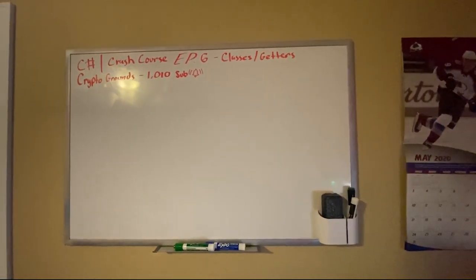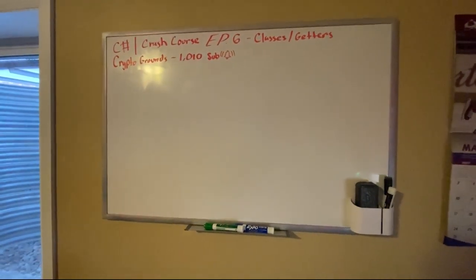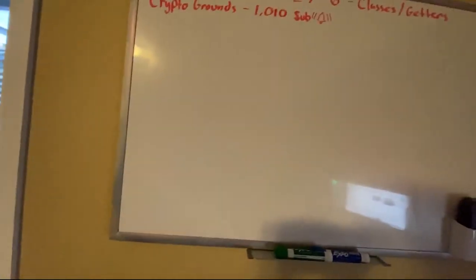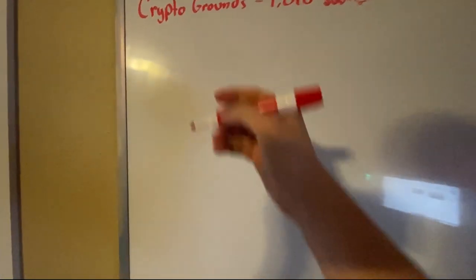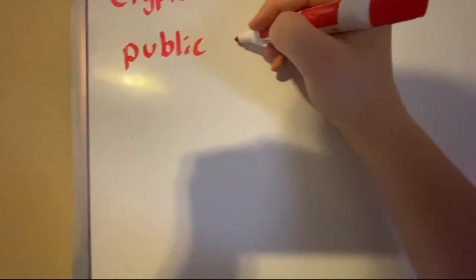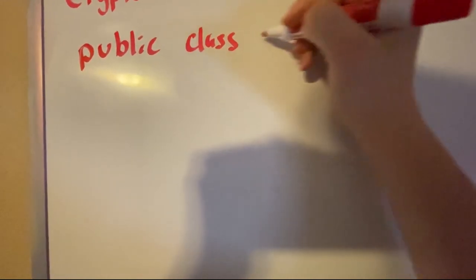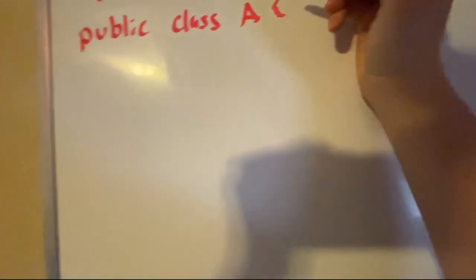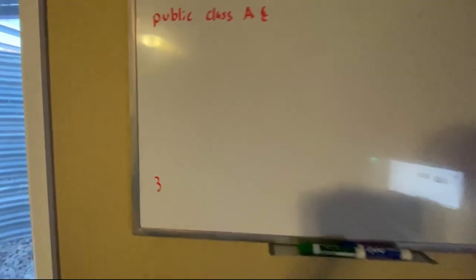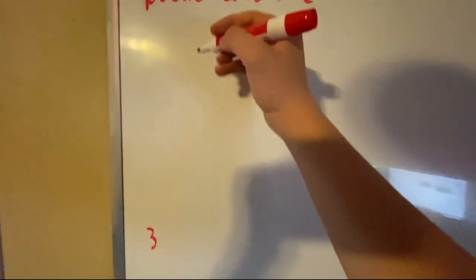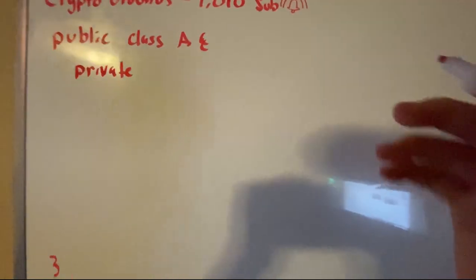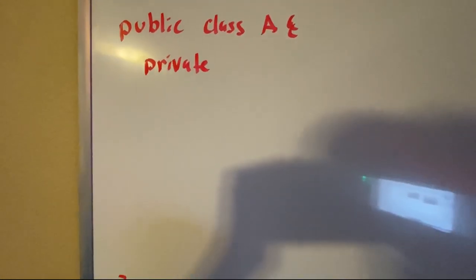So basically I'm going to be explaining how getters work, what's the purpose of them, and when you should use them. Normally in a class, let's just make a class. Let's make a public class, public class A. Let's say we have our public class, we have a private variable that we don't want to modify outside of our class, so we make this private.